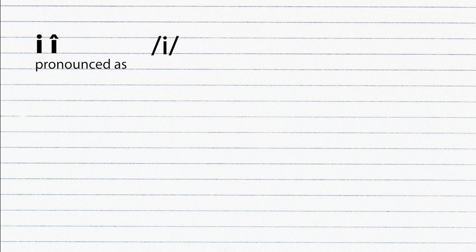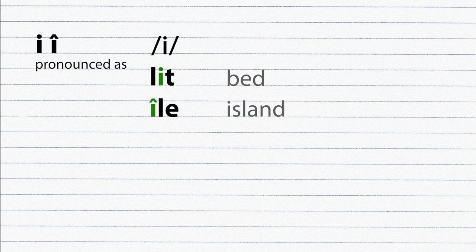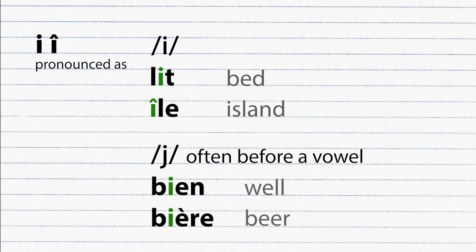I is pronounced as I. Lit, il. And often before a vowel is pronounced as Y. Bien, bizarre.